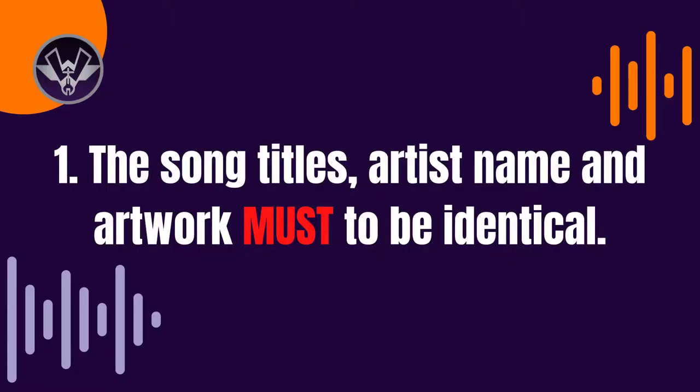Once you've picked out your new distribution, the first thing you want to do is upload the song to the new distributor — but make sure that the song name, your artist name, and the artwork used for that song are identical to whatever was in the previous distribution. Do not change the artwork, do not change your artist name, and do not change the song title. These need to be identical for streaming platforms like Spotify and Apple Music to register it as the same song.